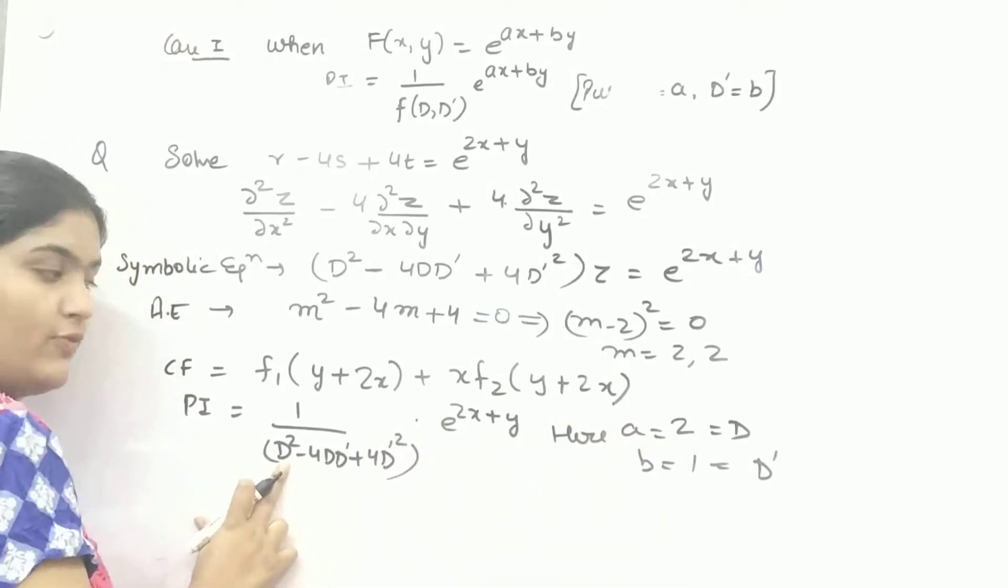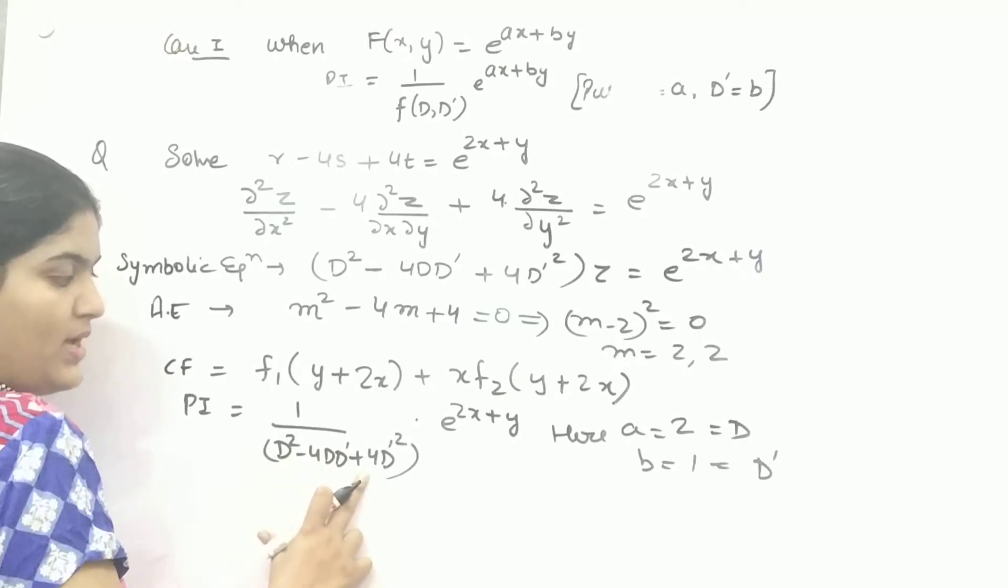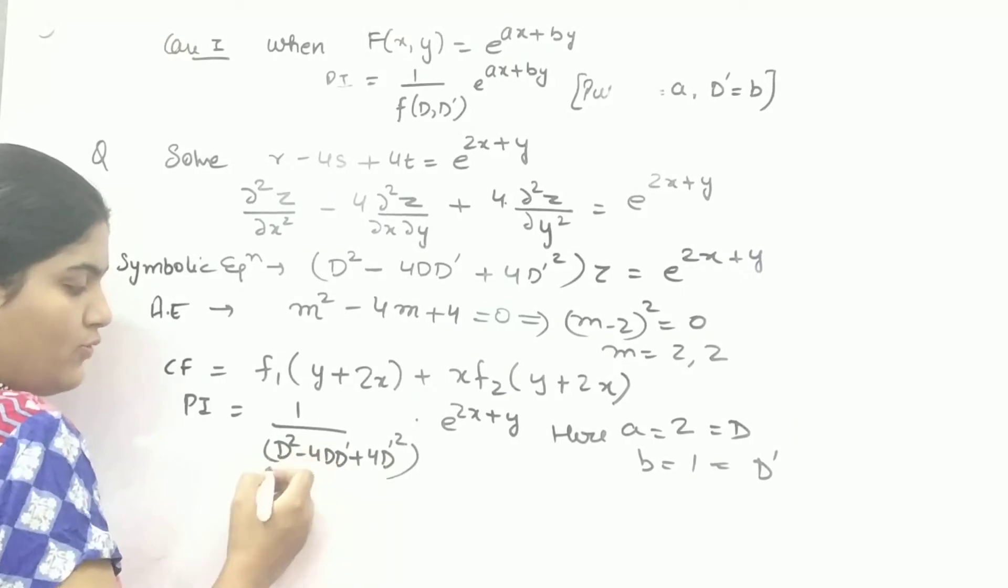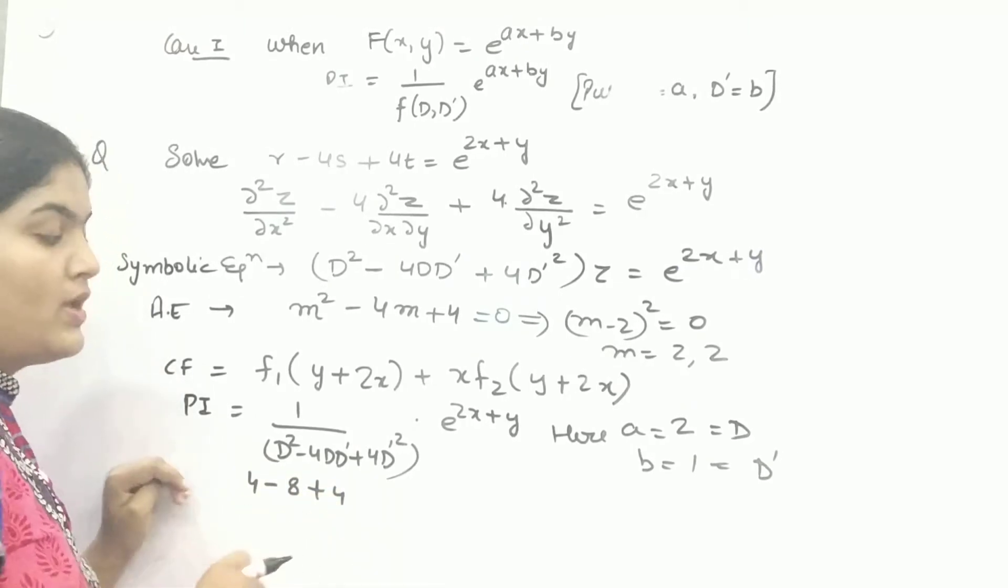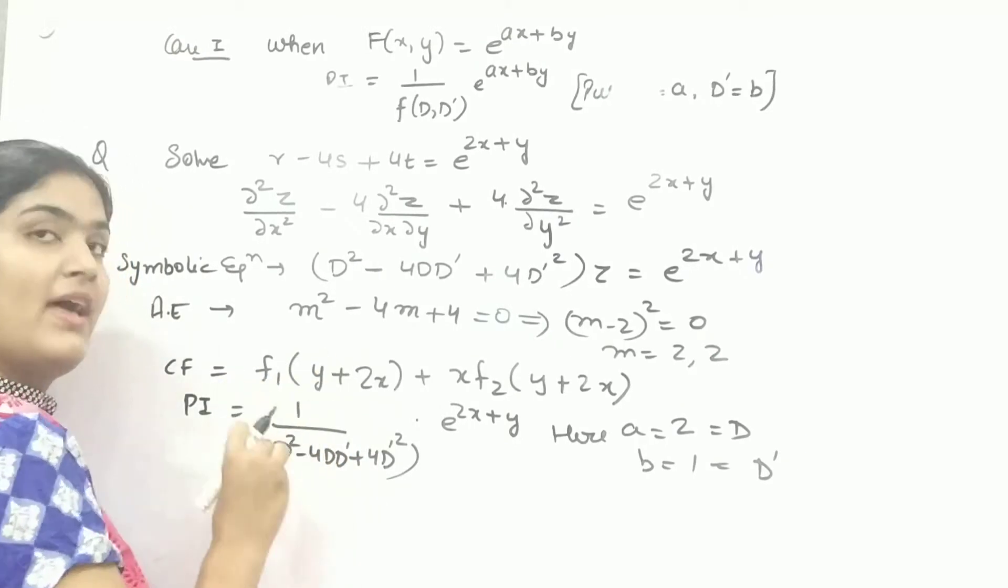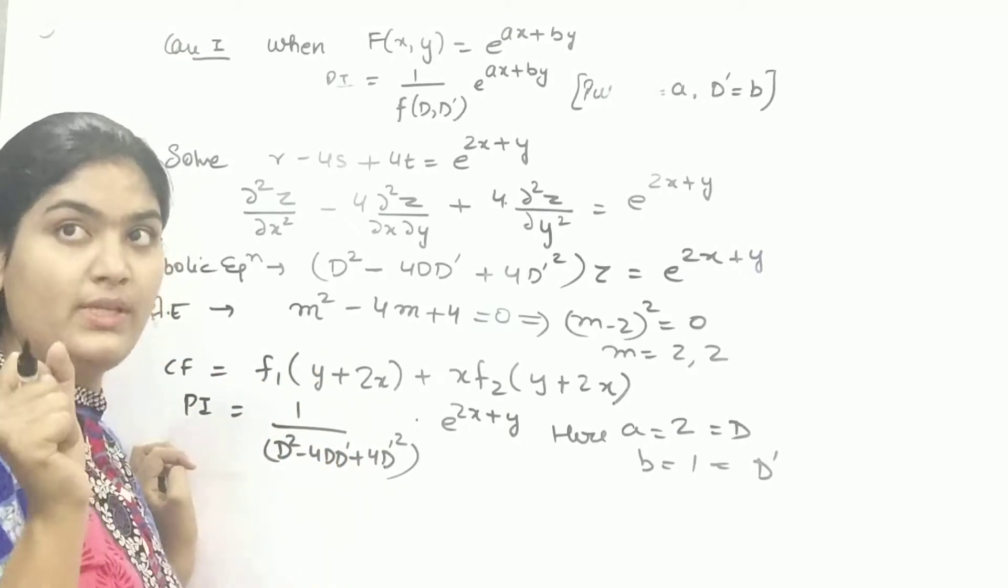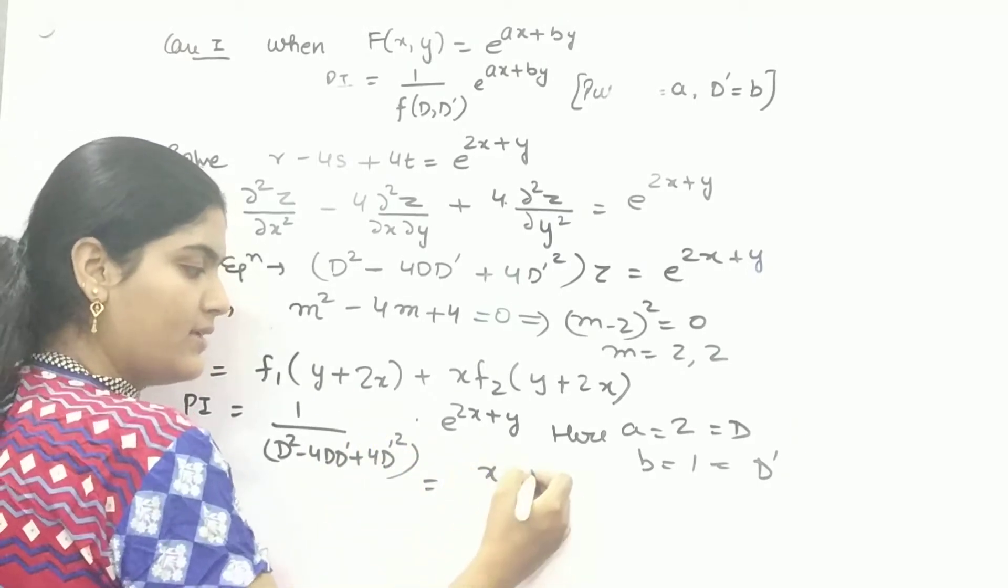2 squared is 4 minus 4 times 2 is 8 plus 4. So 4 minus 8 plus 4, it will be zero. So whenever you will have any function where denominator will be zero, what you need to do? Multiply it with X.